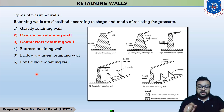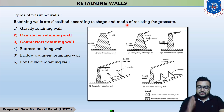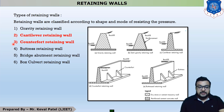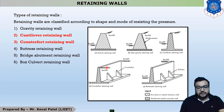The next topic is: how many types of retaining wall are there? Retaining walls are classified according to shape and mode of resisting the pressure. Generally there are 8 to 10 types of retaining wall, but in your syllabus there are only 6 types. The first type is gravity retaining wall. The second is cantilever retaining wall. The third is counterfault retaining wall — in this, the component called counterfault is only in this type of retaining wall.